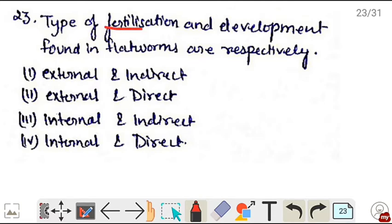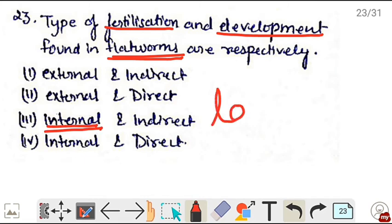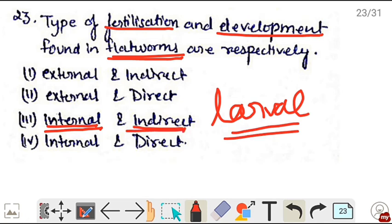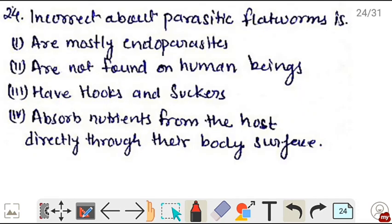Next, type of fertilization and development found in flatworms are - in flatworms, internal fertilization occurs, and after that the embryo has to pass through many larval stages to become an adult. So development is indirect. Correct is option 3, internal fertilization and indirect development.